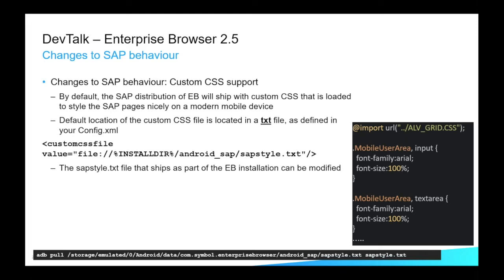Another change is the SAP behavior. We have two different distributions of Enterprise Browser: EB for SAP and a standard EB. EB for SAP is essentially a superset of EB, but it also has custom CSS, HTML, and JavaScript that is automatically injected into the page. Our engineers have worked with SAP to make sure that it renders well on our devices — maybe the SAP was designed for older, smaller screens and now we want it to render well on larger screens, or maybe it was designed for devices which have function keys, and there's a conversion needed for Android key codes.